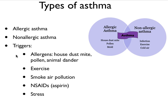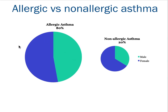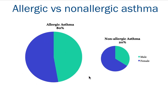The types of asthma can basically be divided into allergic asthma caused by allergens, or non-allergic asthma caused by exercise, smoking, air pollution, etc. If you look at the division of allergic versus non-allergic asthma, most people have allergic asthma — around 80% — and only 20% have non-allergic asthma.